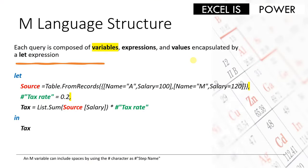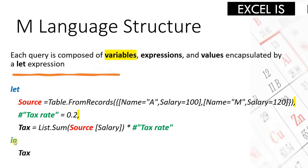Let's start by having a look at the structure of M language. Each and every query is composed of variables, and each variable is holding either an expression or a value, all together encapsulated by a let expression. If you open the advanced editor for any query, you will see a let statement starting by 'let' and ending by 'in'. Between the let and in, you will have the code for your steps. The first step in this example is called 'source' — this is the name of the variable, followed by the equal operator, and then either an expression or a value.